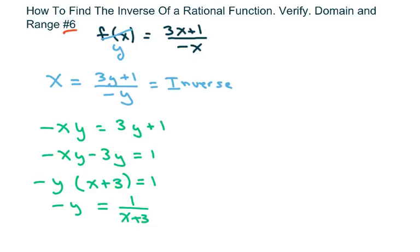And then I'm going to multiply through by negative 1 to solve for positive y. So you get y equals negative 1 over x plus 3.